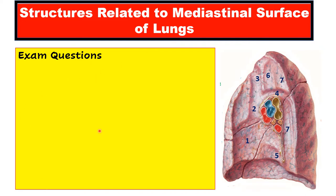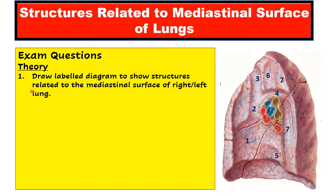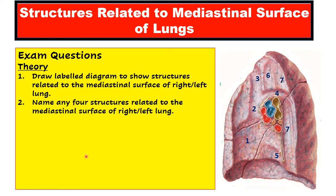Let us look at the questions that are asked in theory paper. You can be asked to draw a labeled diagram to show structures related to the mediastinal surface of either the right or left lung. Second, you can be asked to enumerate any four or five structures related to the mediastinal surface of either right or left lung. You can also be asked MCQs from this topic.